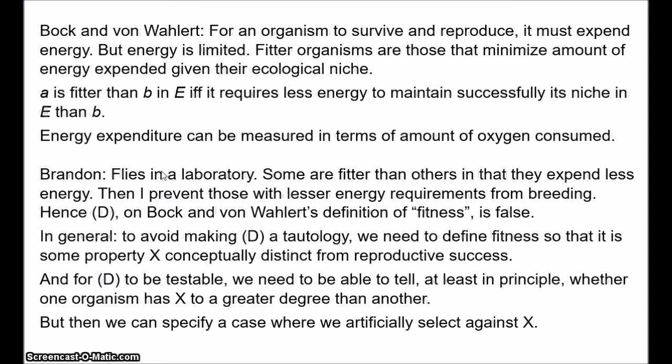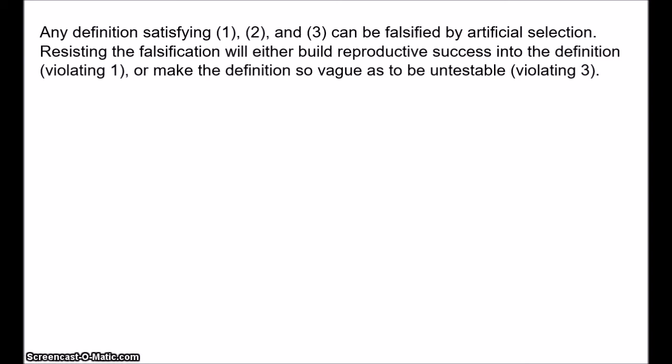Take Gould's superior design definition. Gould says the fitter organism is the one with superior design. We need to specify superior design in a way that doesn't simply become reproductive success — it's some other property X. Then we select for organisms that don't have X in the laboratory, which could always be done in principle if not in practice. So any definition satisfying conditions 1 to 3 can be falsified by artificial selection. If you resist the falsification, you'll either include reproductive success in the definition of fitness — making D a tautology — or you'll make the definition so vague or inapplicable that the third condition is violated and D becomes untestable.